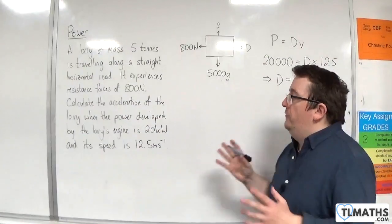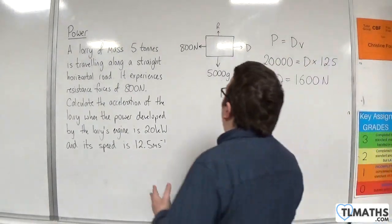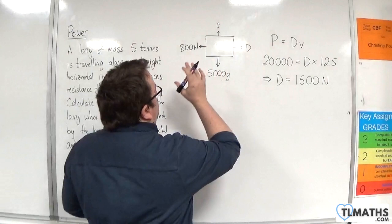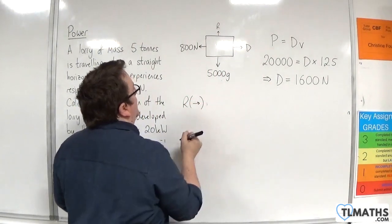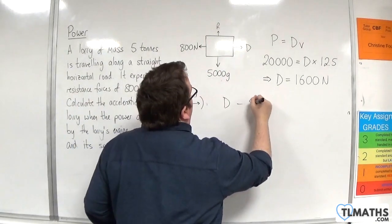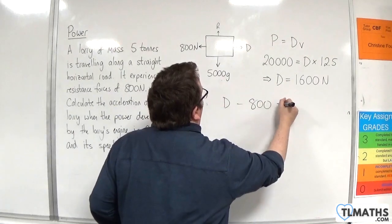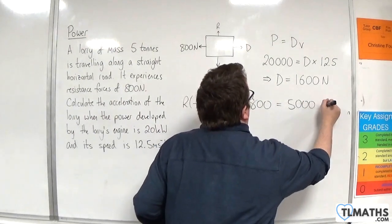So now I've got enough information to utilise Newton's second law, f equals ma. So resolving forces to the right, we've got d working to the right and then take away the 800. It's going to be equal to the mass times by the acceleration.